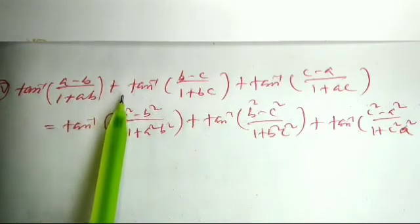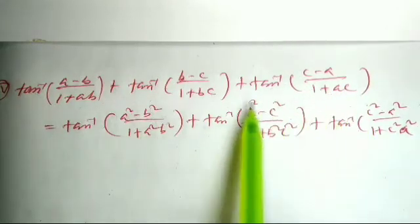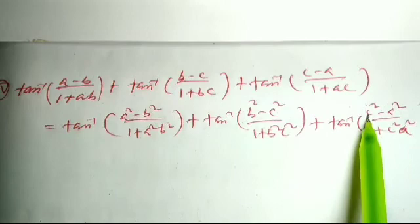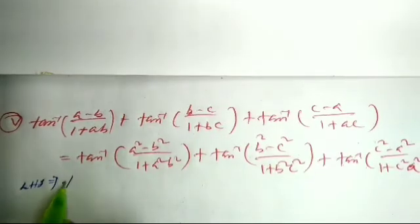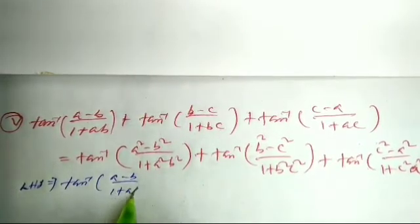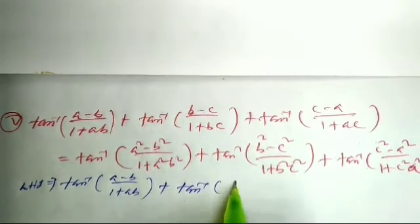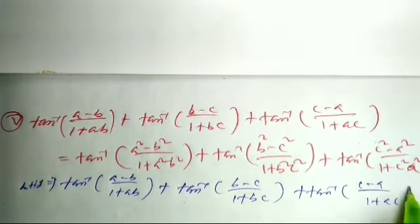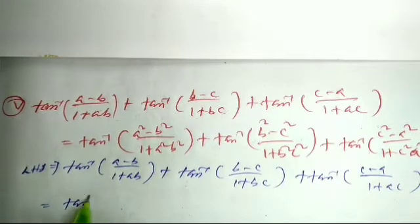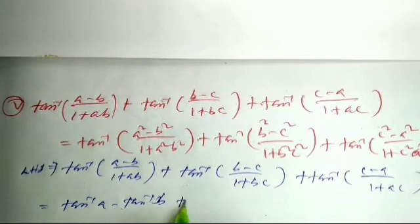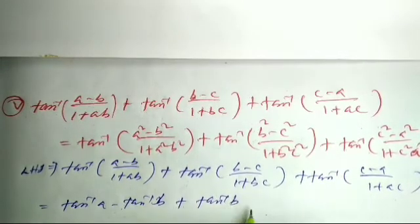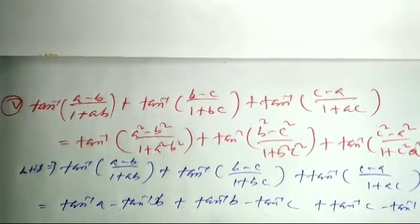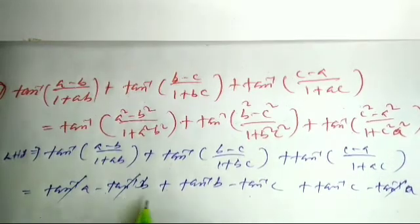Question 5: tan⁻¹((a-b)/(1+ab)) + tan⁻¹((b-c)/(1+bc)) + tan⁻¹((c-a)/(1+ac)) = tan⁻¹((a²-b²)/(1+a²b²)) + tan⁻¹((b²-c²)/(1+b²c²)) + tan⁻¹((c²-a²)/(1+c²a²)). LHS: applying tan⁻¹(a) - tan⁻¹(b) formula, we get (tan⁻¹(a) - tan⁻¹(b)) + (tan⁻¹(b) - tan⁻¹(c)) + (tan⁻¹(c) - tan⁻¹(a)).